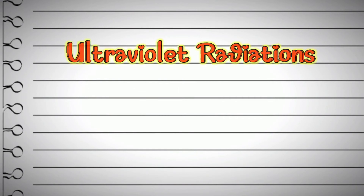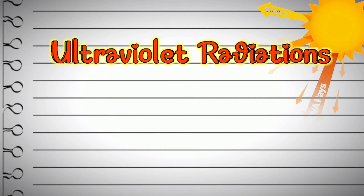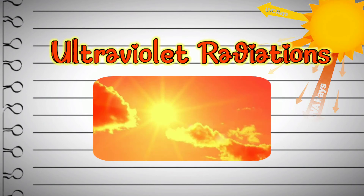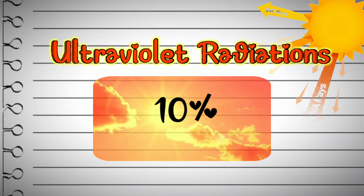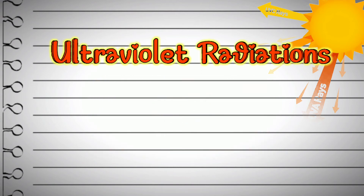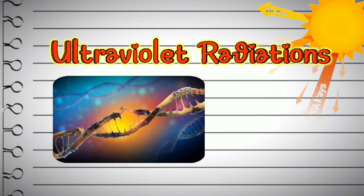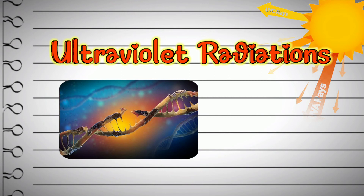The next type of electromagnetic radiation is ultraviolet radiation, also known as UV radiation. Its wavelength ranges from 10 nanometers to 400 nanometers. UV radiation is present in sunlight and constitutes about 10 percent of the total electromagnetic radiation coming from the sun. UV radiation is not as harmful as X-rays and gamma radiation, but it has enough energy to damage DNA.